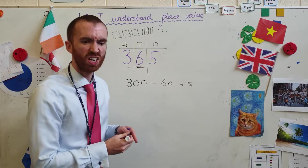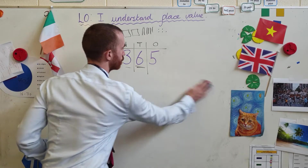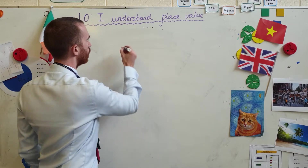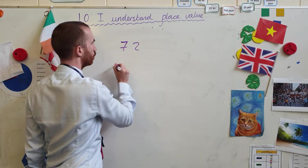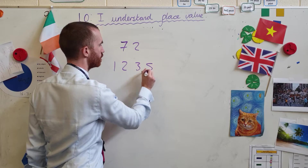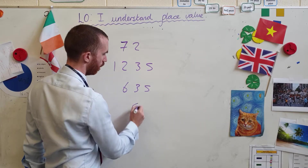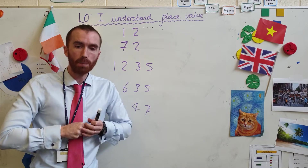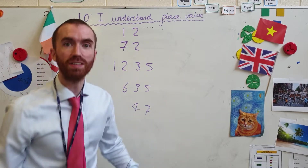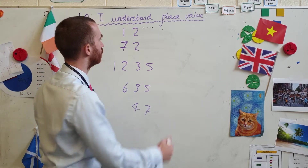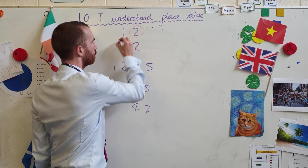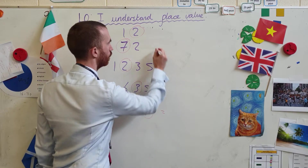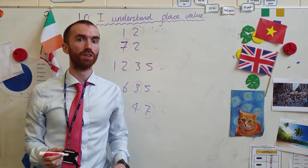Let's do a little practice on that to see that you've got it, and then I'll give you a little challenge. It's only a quick skill, it's not going to last very long. So if I give you a few numbers on the board — we've got 72, 1,235, 635, 47, and 12 at the top. I'm going to circle a number, and you need to tell me what the value of that number is. All I want is the value of the circled number. Pause.